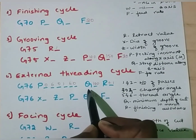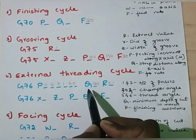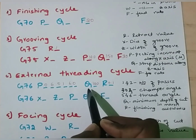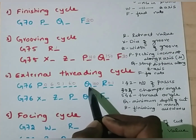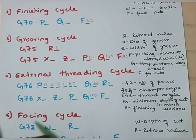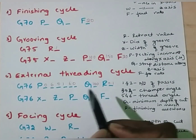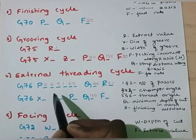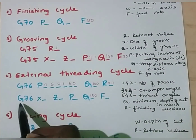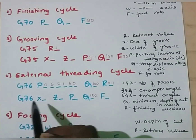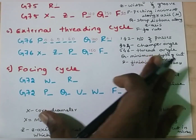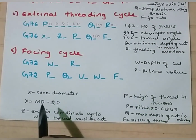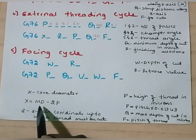Next we have Q, which is nothing but minimum depth of cut. We have to substitute Q in terms of microns — I am going to assume it as 100 microns. R is finishing allowance; I am going to assume it as 0.1 mm. In the second line, again G76 — threading cycle — where X is nothing but core diameter. The formula to determine core diameter is major diameter minus 2P, where major diameter we get from the geometry given in the question.